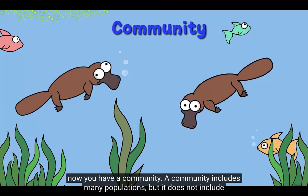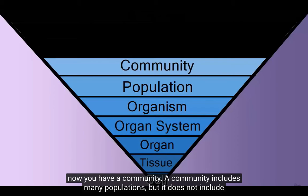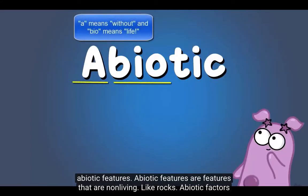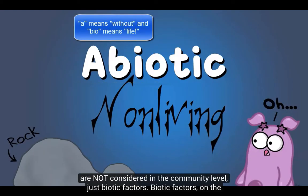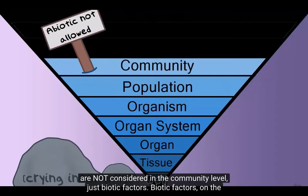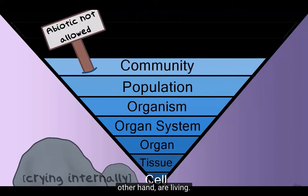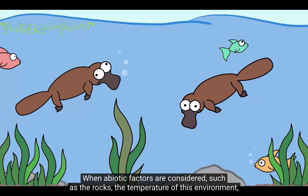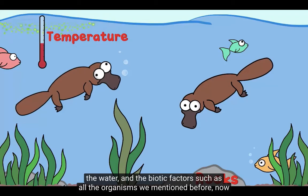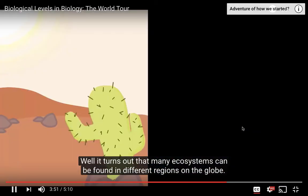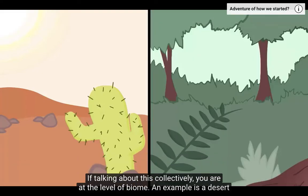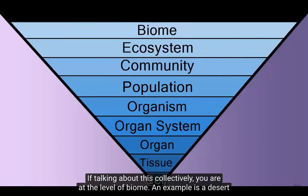A community includes many populations, but it does not include abiotic factors. Abiotic factors are factors that are non-living, like rocks. Abiotic factors are not considered in the community level, just biotic factors. Biotic factors, on the other hand, are living. When abiotic factors are considered — such as rocks, the temperature of the environment, and the water — along with the biotic factors such as all the organisms, we now have an ecosystem. It turns out that many ecosystems can be found in different regions on the globe, and if talking about this collectively, you are at the level of biome.